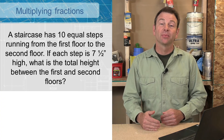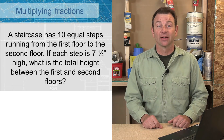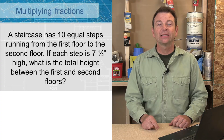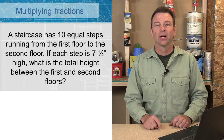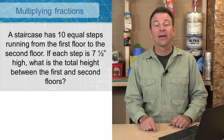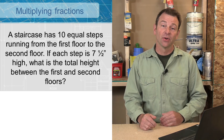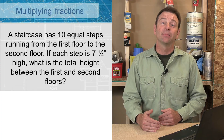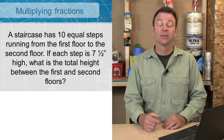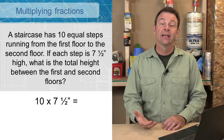In construction it's often the case that we have multiples of the same dimension, and when those add up that's the same as multiplying a fraction. Let's go ahead — I'll read this problem and then we'll solve it. A staircase has 10 equal steps running from the first floor to the second floor. If each step is seven and a half inches high, what is the total height of the staircase between the first and second floors?